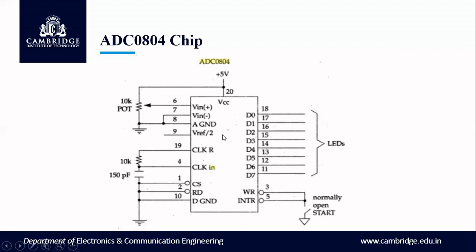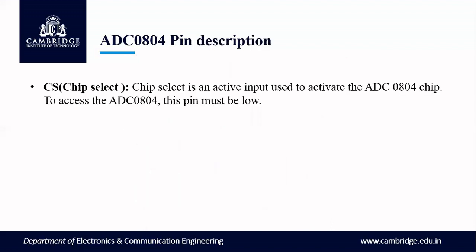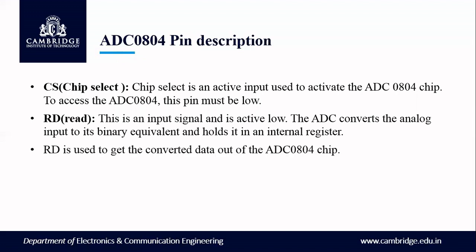CS is chip select — it is an active input used to activate the ADC0804 chip. To access the ADC, this pin must be low. RD stands for read; it is an input signal and is active low. The ADC converts the analog input to its binary equivalent and holds it in an internal register. This pin is used to get the converted data out of the ADC chip.